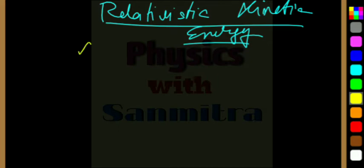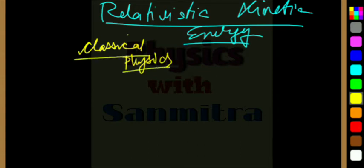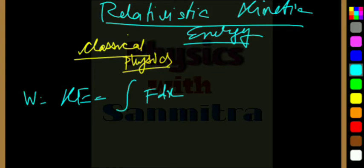Let's talk about classical physics. What did you learn about kinetic energy? Kinetic energy was the work done. Work done is change in kinetic energy, the work-energy theorem. This is dp by dt, that is change in momentum, into dx.